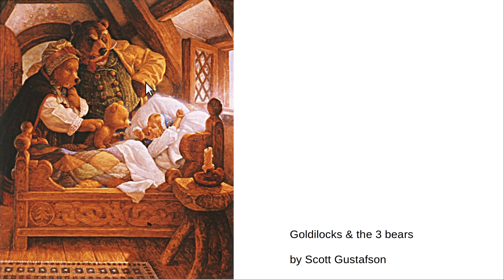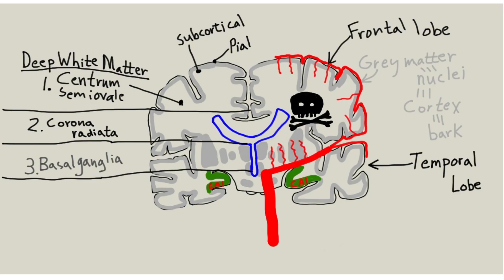Here's Papa Bear, Mama Bear, Baby Bear, and Goldilocks. In your brain, you've got the internal carotid artery, the ICA, which comes up and bifurcates. This is the middle cerebral artery, usually called the MCA. These are the branches to the deep tissues of the brain called the basal ganglia.